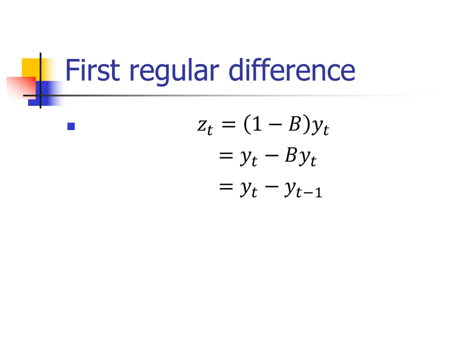Let's look at the first regular difference. Z sub T equals 1 minus B to the power 1, times Y sub T. I can distribute, so now I have Y sub T minus B times Y sub T. By definition, B times Y sub T is Y sub T minus 1. And there, in fact, is the formula for the first regular difference.